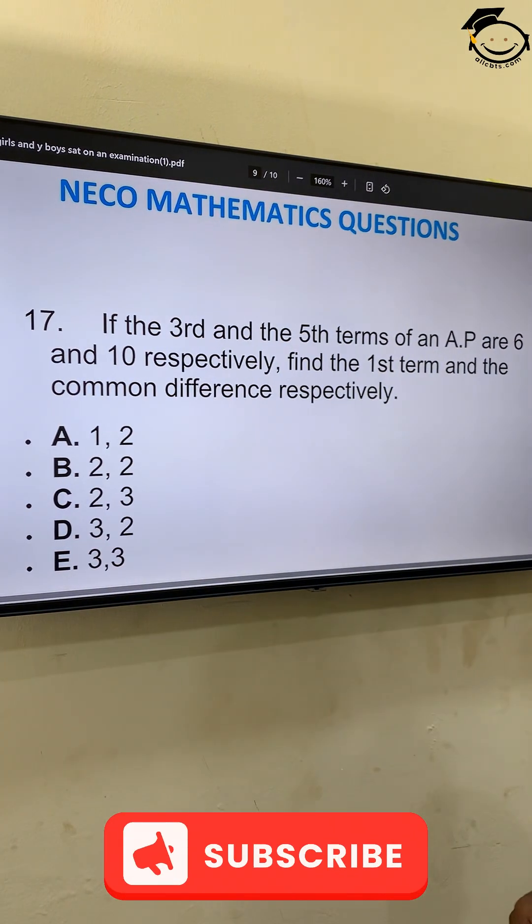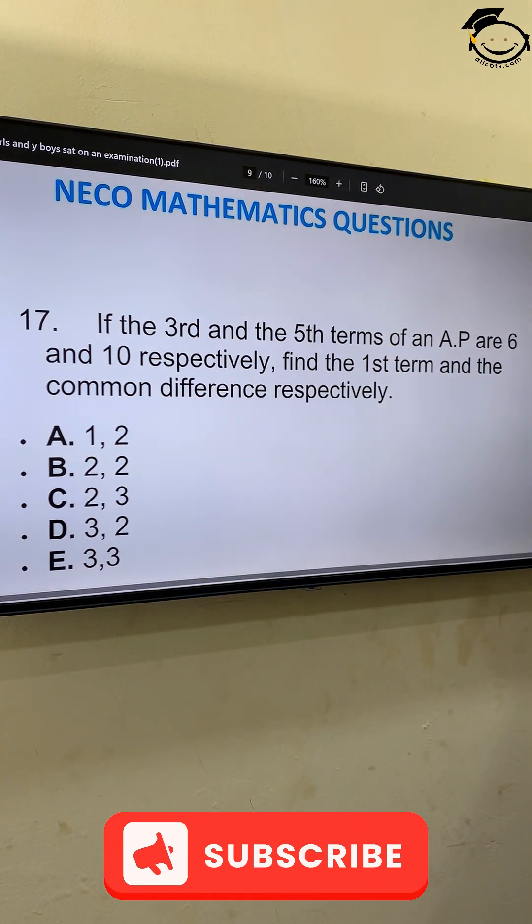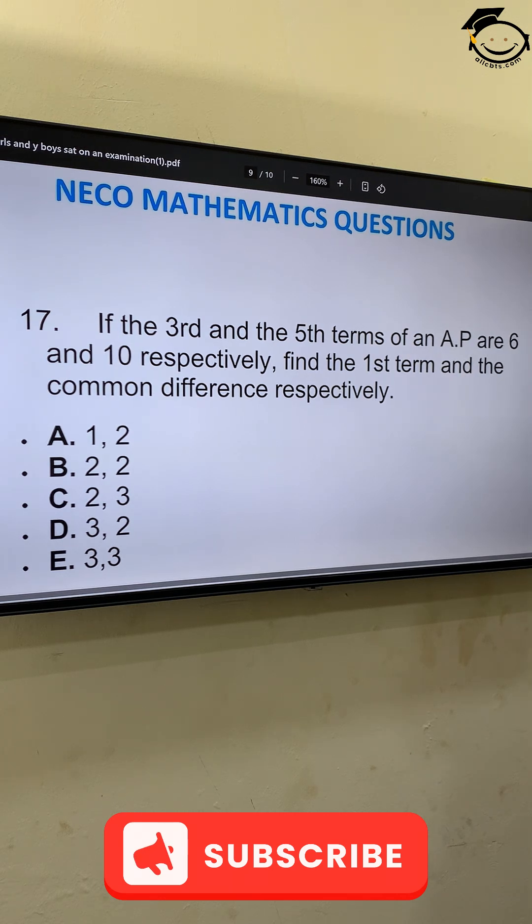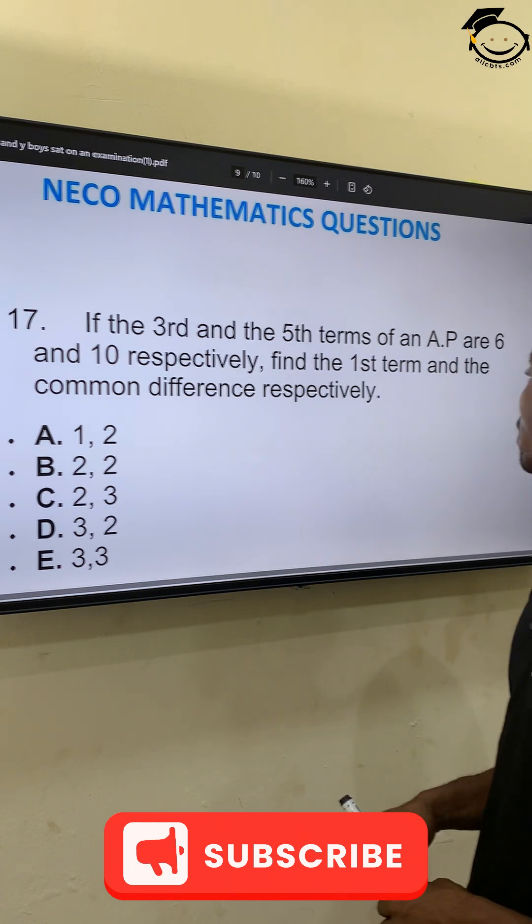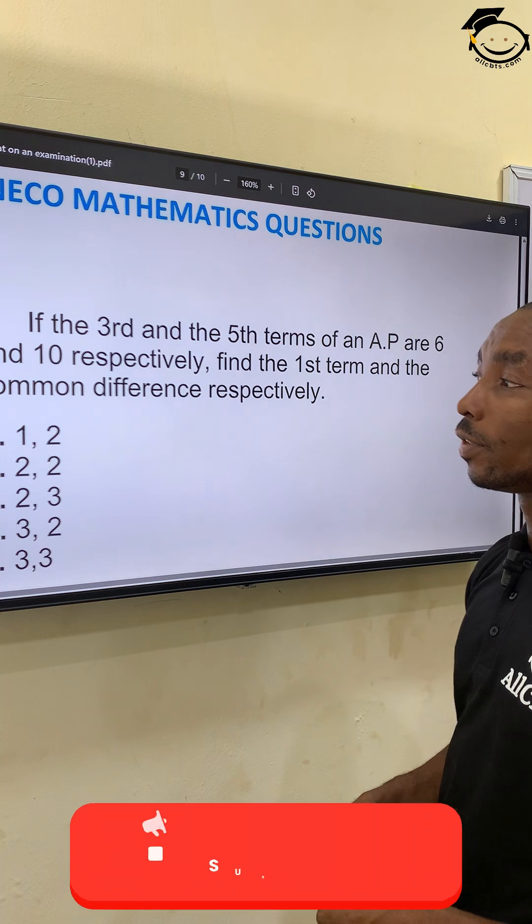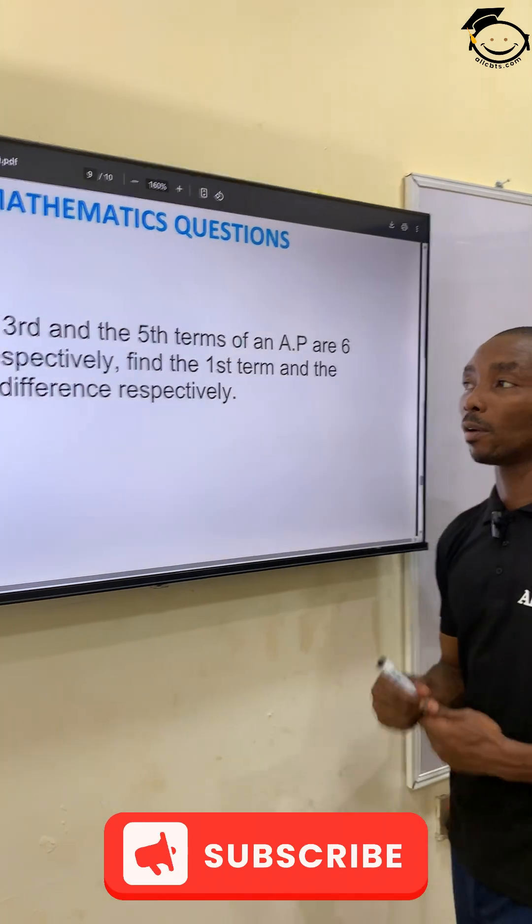If the 3rd and the 5th term of an AP are 6 and 10 respectively, find the first term and the common difference respectively.